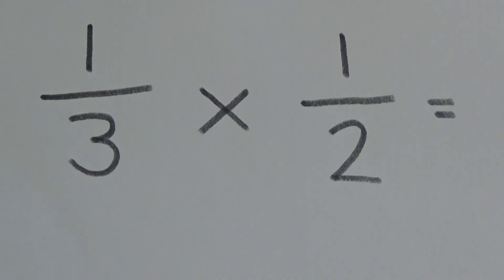For our first one, we're going to work out a third multiplied by a half. This is the same as saying a third of a half, so the answer is going to be smaller than a half.